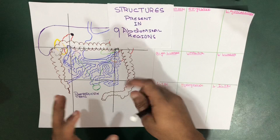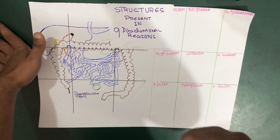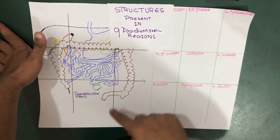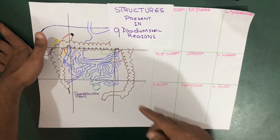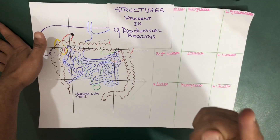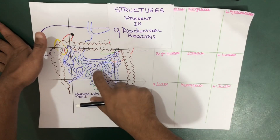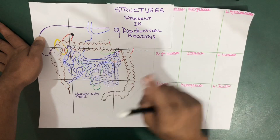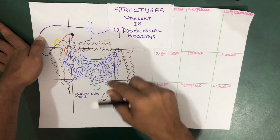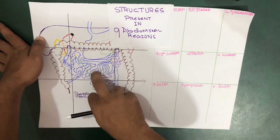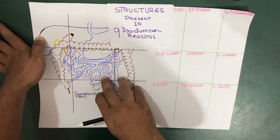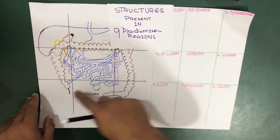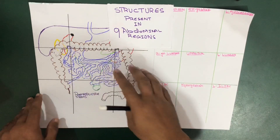So, we have nine abdominal regions. A quick fact: there is one structure that is present in all nine abdominal regions — that is the small intestine. We're going to talk about each and every structure present, but I just gave you a quick review of how I'm going to explain them using this diagram.